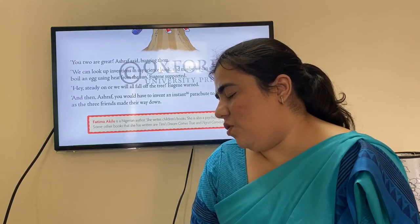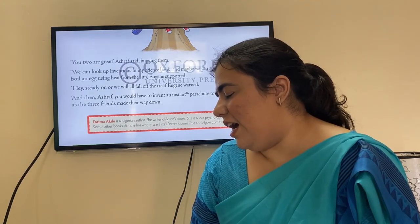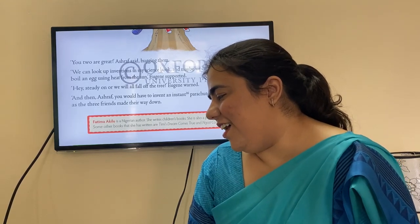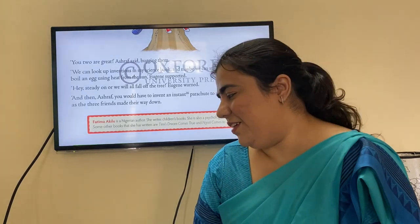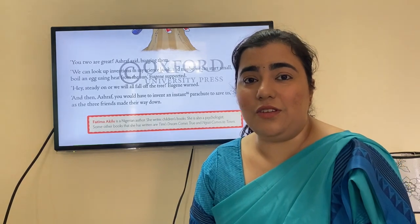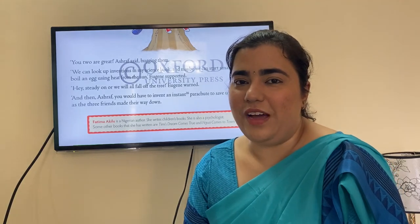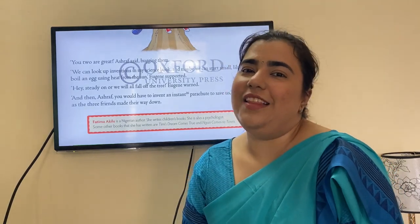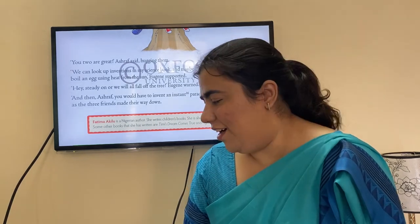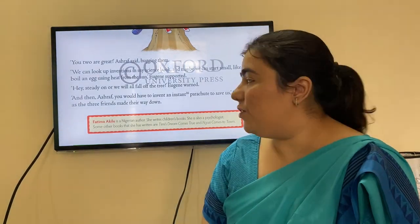'Hey, steady on or we will fall off the tree!' Eugene warned. 'And then Ashraf, you would have to invent an instant parachute to save us,' Segan laughed. They all laughed at the silly joke and made their way down from the tree.